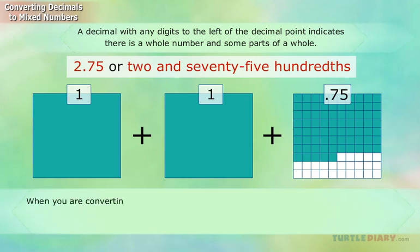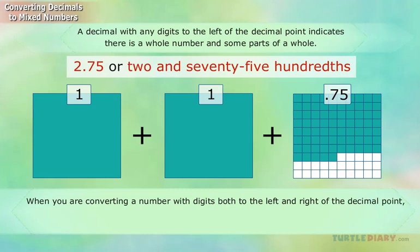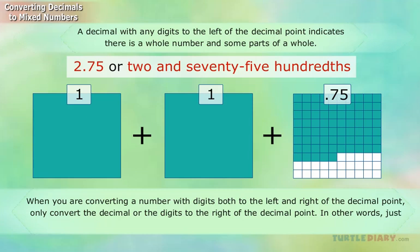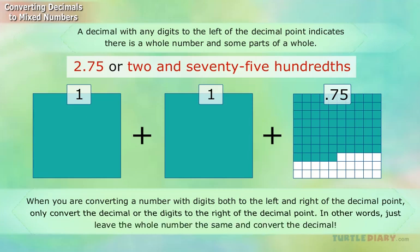When you are converting a number with digits both to the left and right of the decimal point, only convert the decimal — the digits to the right of the decimal point. In other words, just leave the whole number the same and convert the decimal.